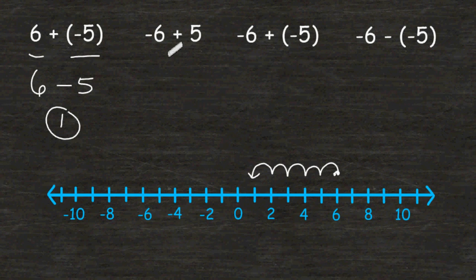The second example reads negative 6 plus 5. That means we must start at negative 6 on the number line and then move forward or to the right a distance of 5. So starting at negative 6, let's move to the right 1, 2, 3, 4, and 5. And that would place us at negative 1 on the number line.